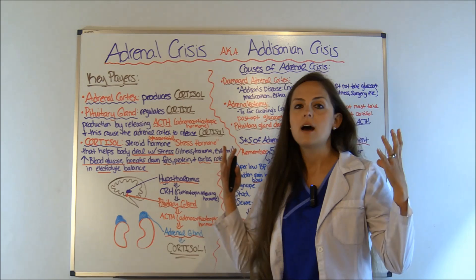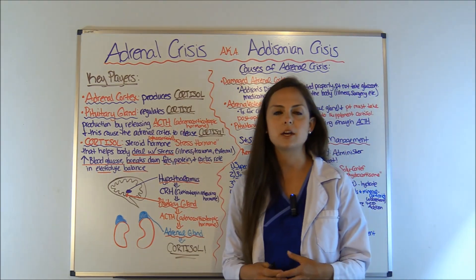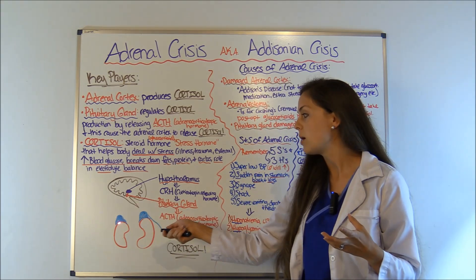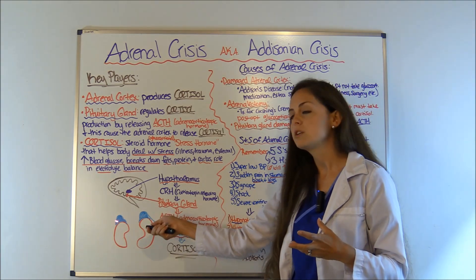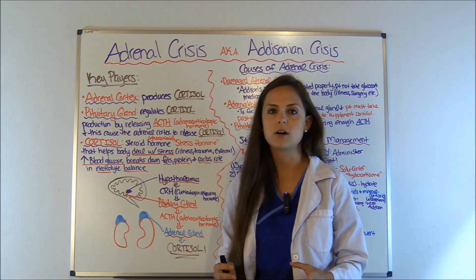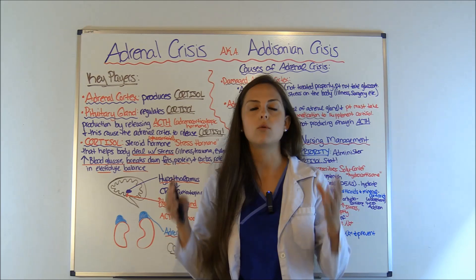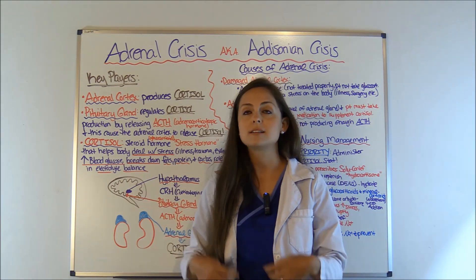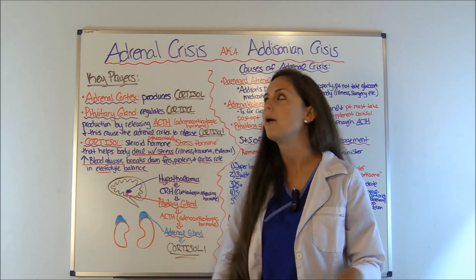First, let's talk about the role of those three things. The adrenal cortex is part of the adrenal glands, which sit on top of your kidneys — that cone-shaped area. The main thing with adrenal crisis is cortisol. Commit that to memory. The problem with Addisonian crisis, also called adrenal crisis, is that cortisol is way too low.